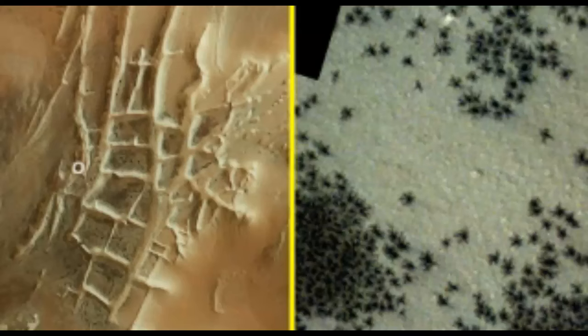Ladies and gentlemen, we have new Mars satellite photos. Mars satellite pictures show what looks like an Inca city and what looks like spiders emerging from the ground. Hundreds of black spiders spotted in mysterious Inca city on Mars in new satellite photos.